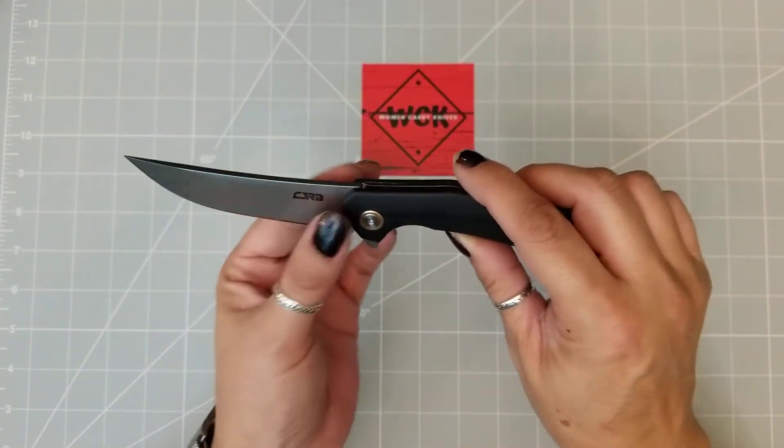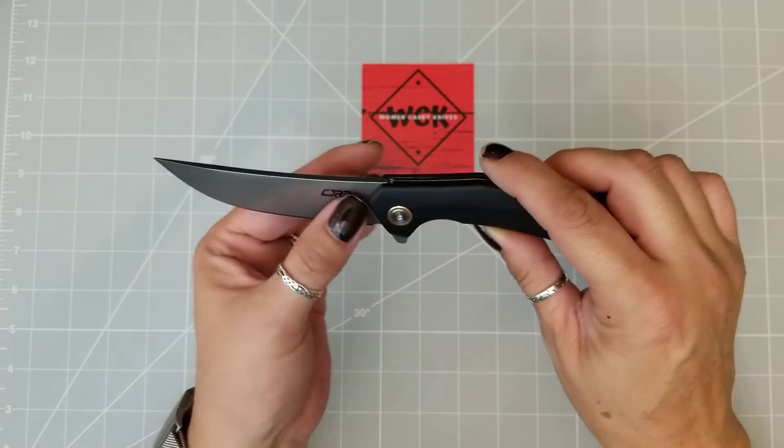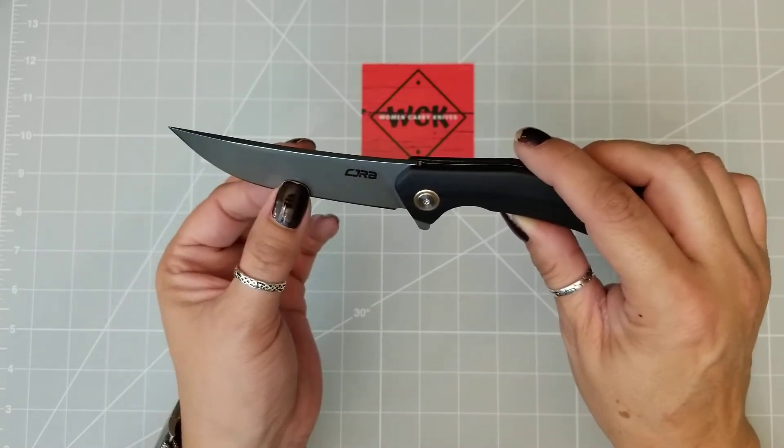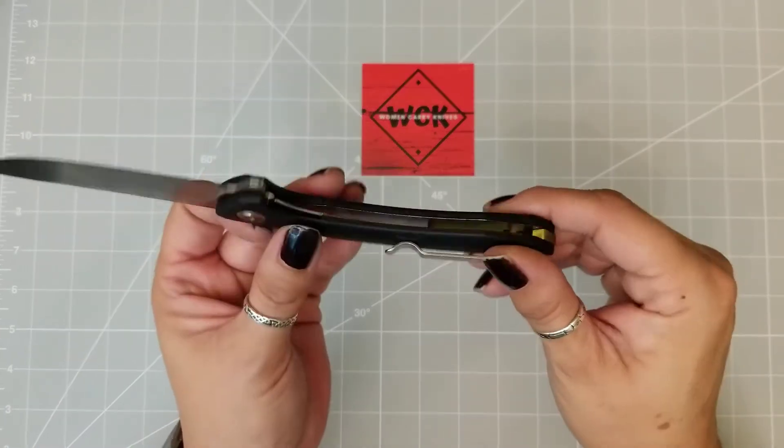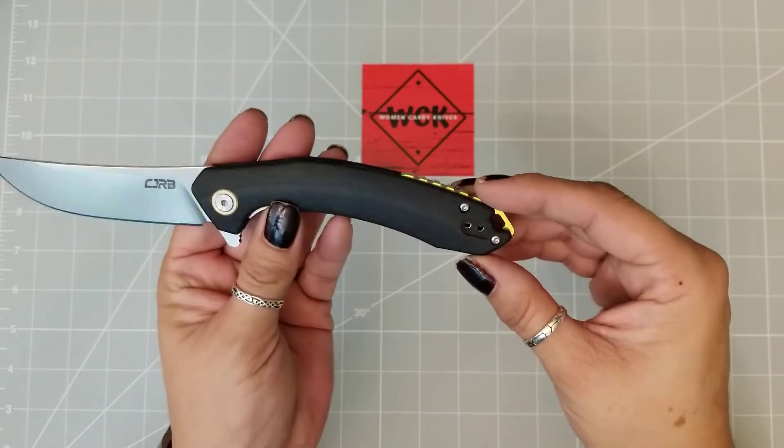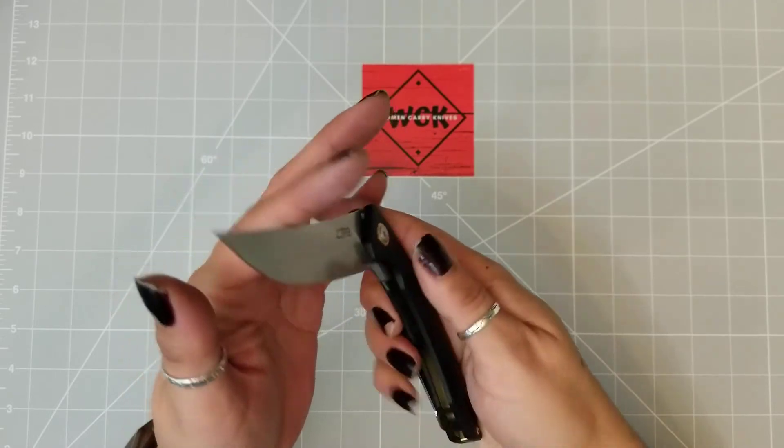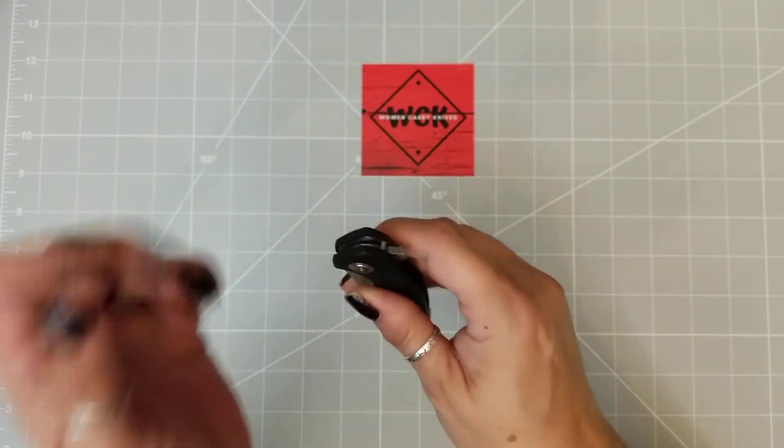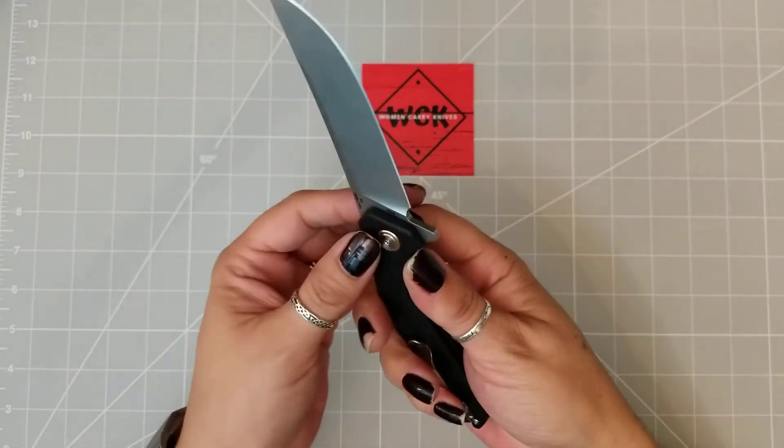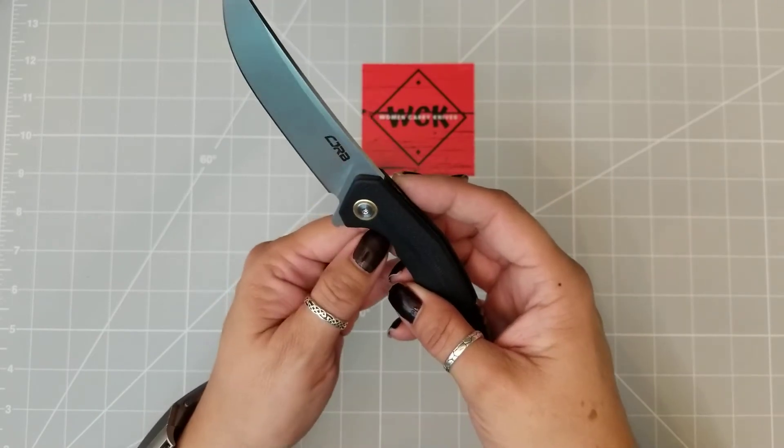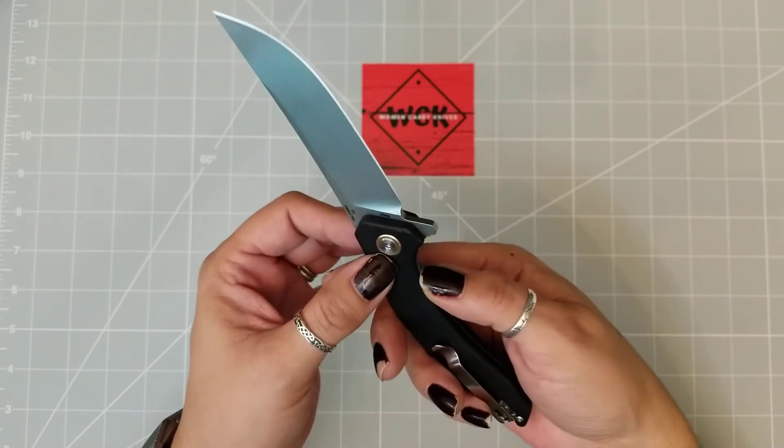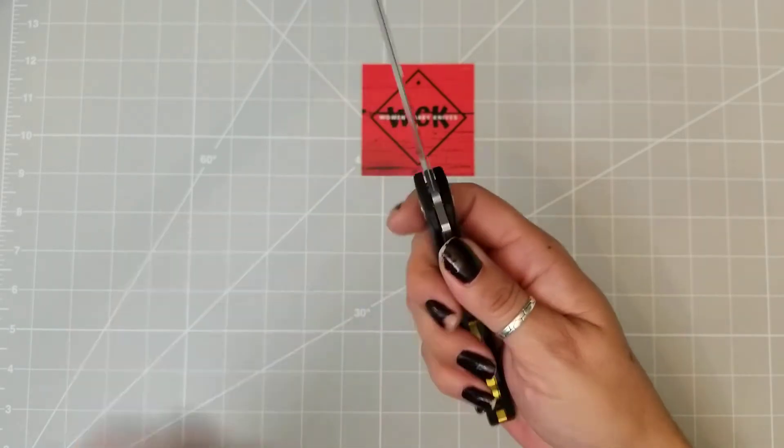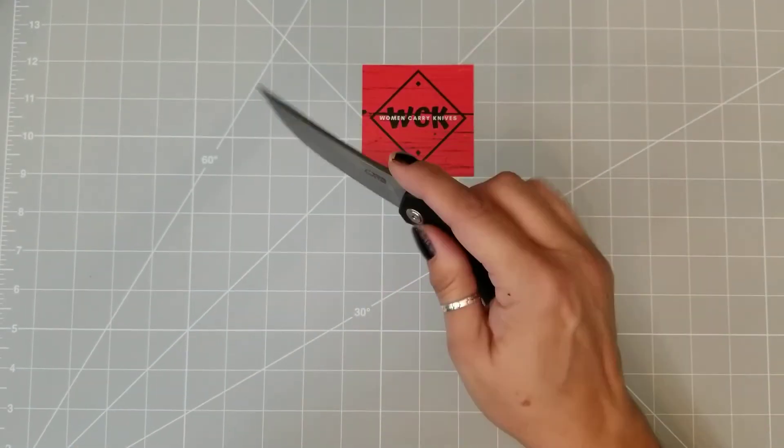Like I said, it is a D2 blade. It's got this beautiful upswept blade here, absolutely gorgeous. It is a reversible pocket clip, so it is ambidextrous. The actual liner lock itself has a cutout where the liner sits just above the G10 on this knife, which does make it much easier to get to.